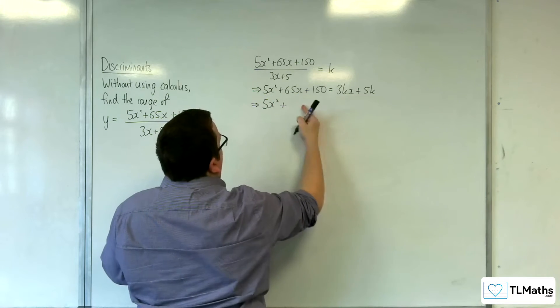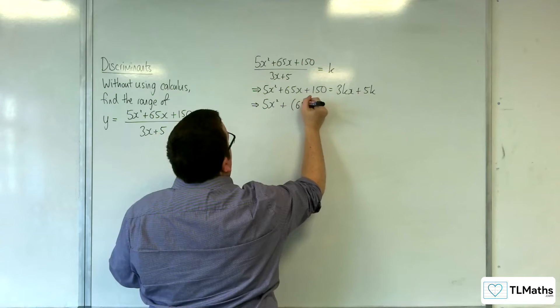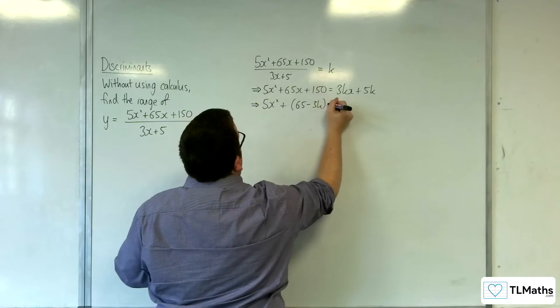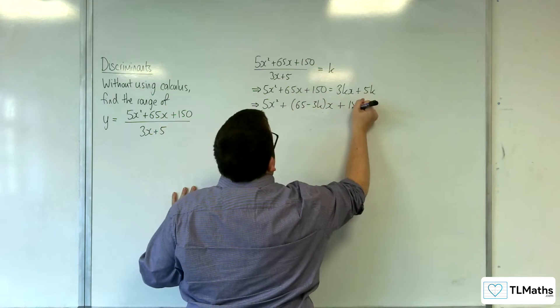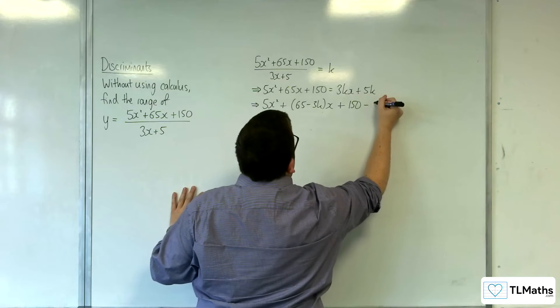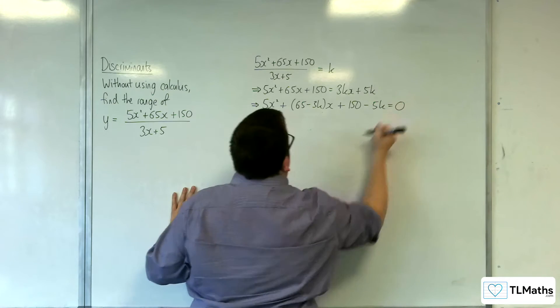So 5x squared, take the 3kx from both sides, I'll have 65 take away 3kx, and then subtract the 5k is equal to 0.